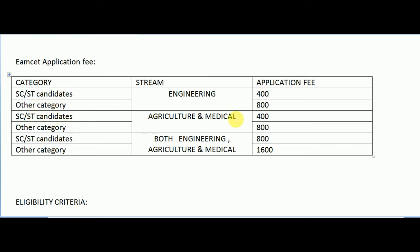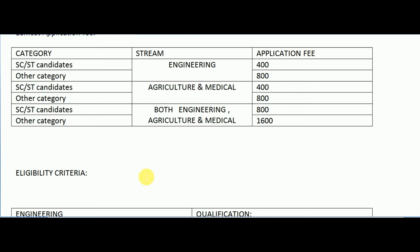SC/ST students who have chosen agriculture and medical need to pay 400 rupees, and other category students who have selected agriculture and medical need to pay 800 rupees. SC/ST students who have selected both engineering and agriculture/medical need to pay 800 rupees, and other category students who selected both need to pay 1600 rupees.